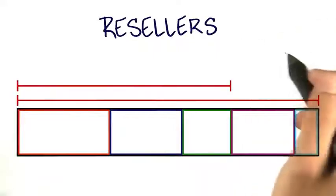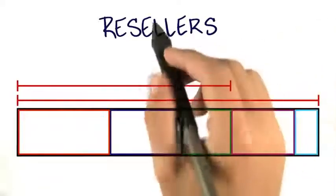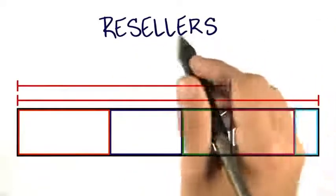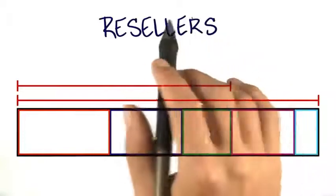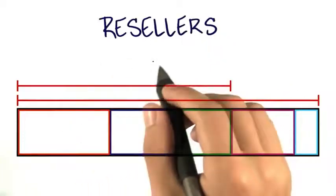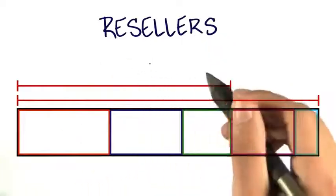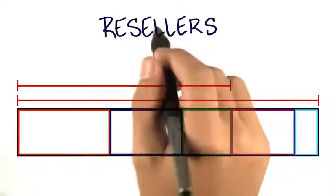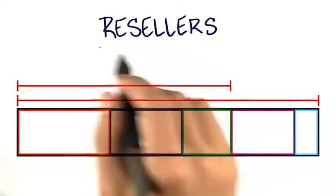Now that we've looked at channel economics for direct sales, let's take a look at what the channel economics would look like if we were selling through an indirect channel — resellers.